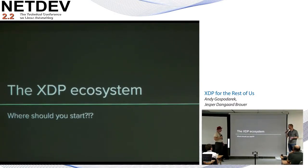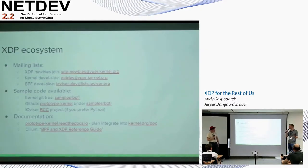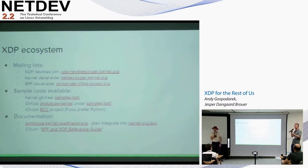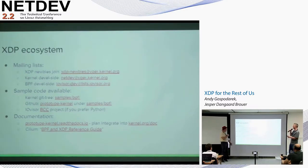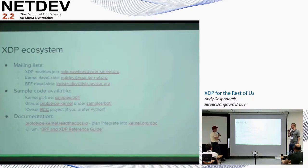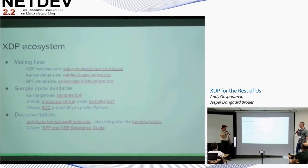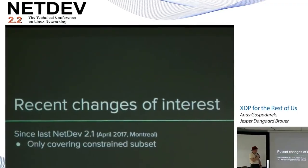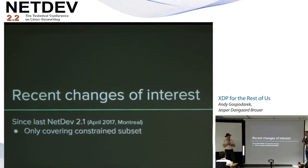To get involved in the XDP ecosystem, there are several mailing lists available — these slides will appear online. There's an XDP newbies list where questions are being posted right now. There's also documentation; Daniel wrote a pretty good guide published on the Cilium website. Jesper's documentation will hopefully be integrated into the kernel docs.